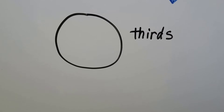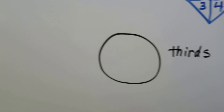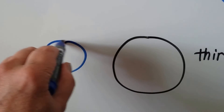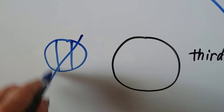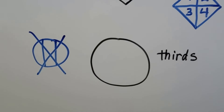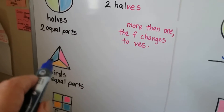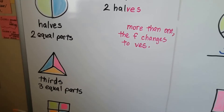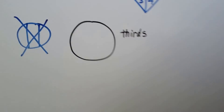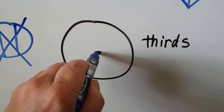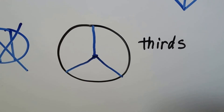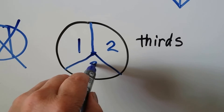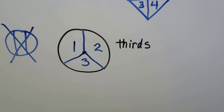What if we wanted to make thirds in a circle? We can't just draw straight lines like we did with a rectangle — that part isn't equal to that part, so that doesn't work. We would have to do it the same way we did the triangle: find the middle and make the lines come out from the center. So for a circle, we find the middle and draw one line this way, one this way, and one this way. Now we've got one, two, three equal parts.